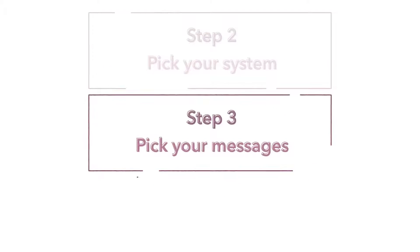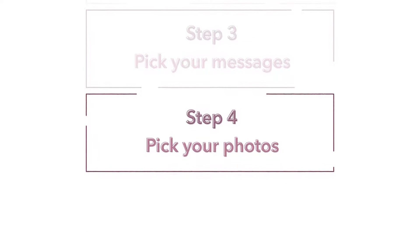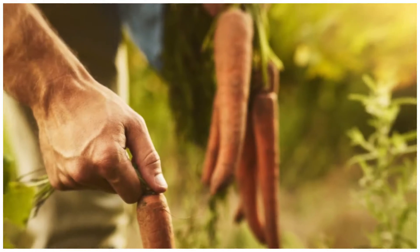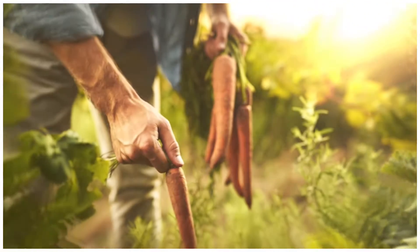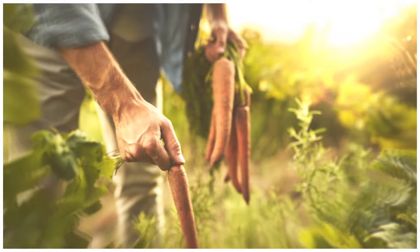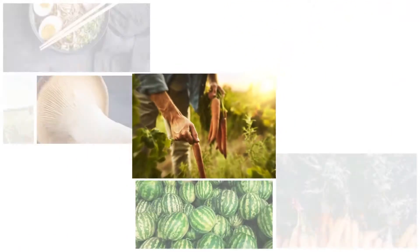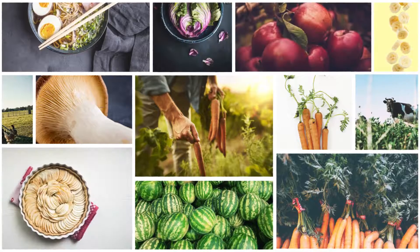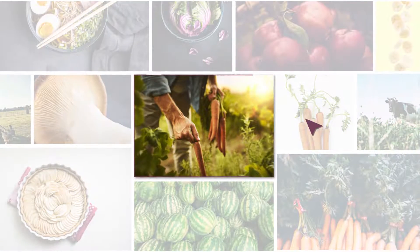Step four: pick your photos. Honest Food includes all aspects of food — from the ingredients themselves, to the people who grew them, to the meals they end up in. Choose images most suited to your needs.